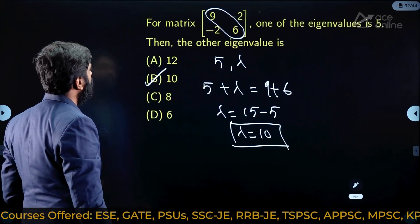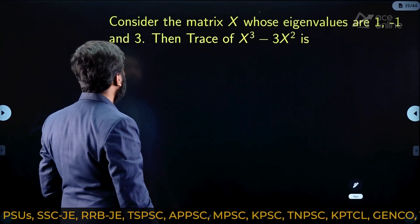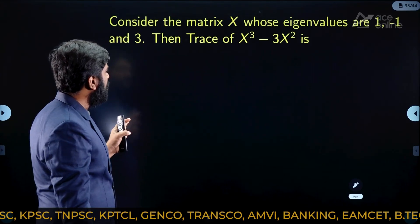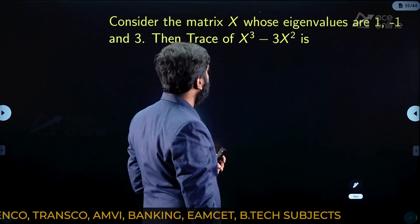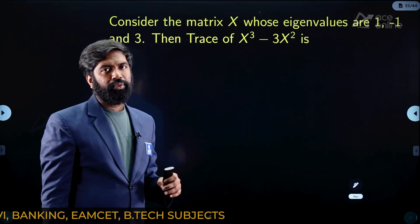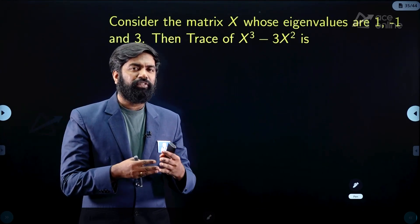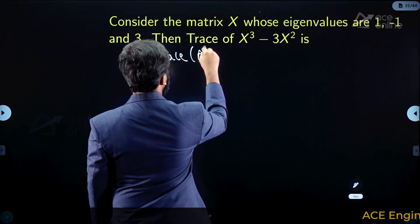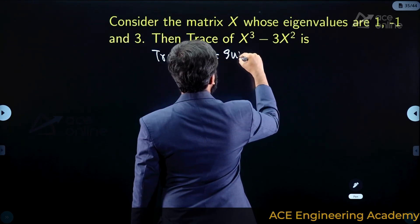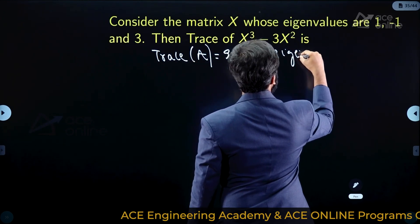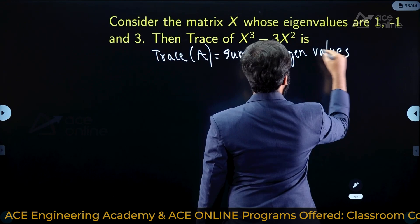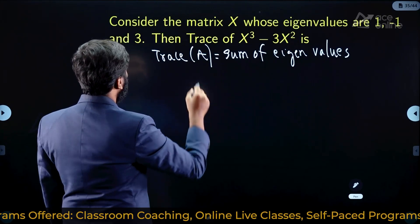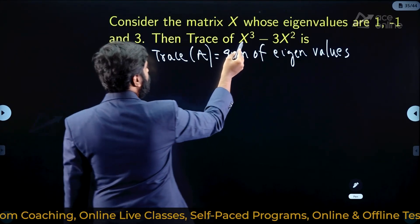Consider matrix X whose eigenvalues are 1, -1, and 3. Find the trace of X³ - 3X². The trace of any matrix equals the sum of its eigenvalues. So we need to find the eigenvalues of X³ - 3X².